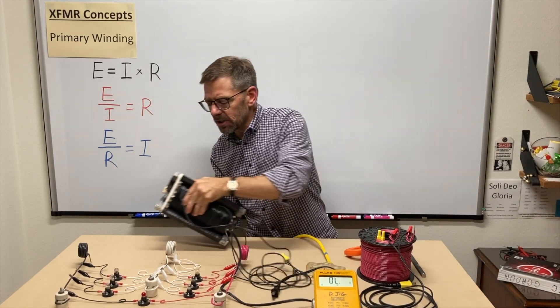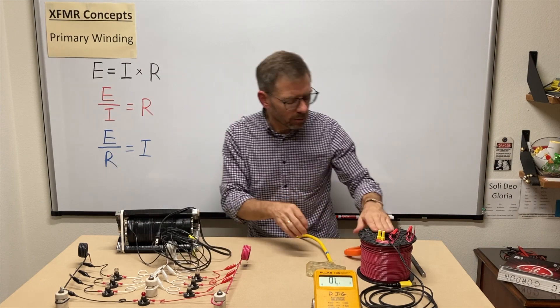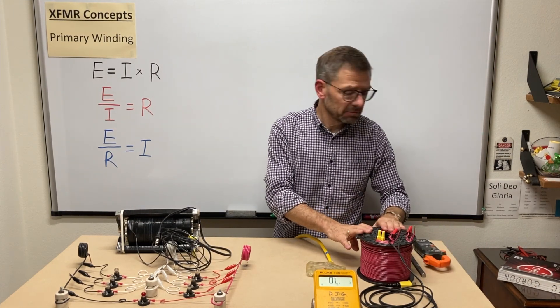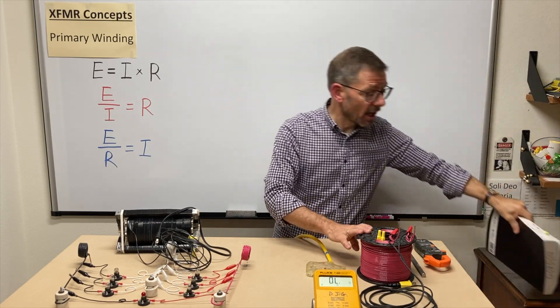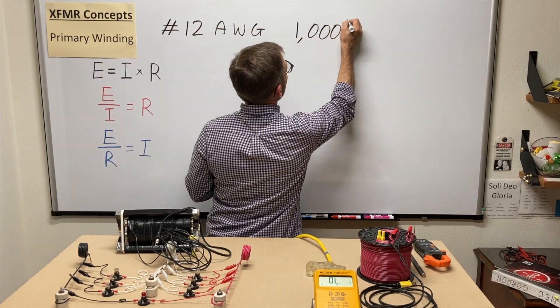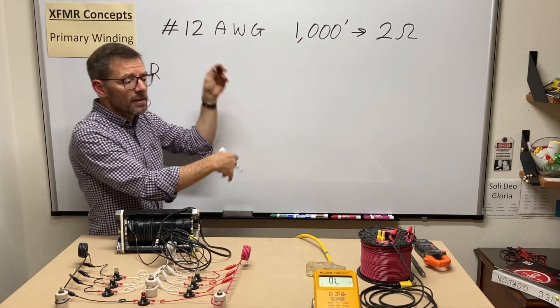And to explain that, I'll set this one aside and use just a coil of wire over here. I've got 500 feet of number 12. And if I look in my code book, chapter nine, table eight, it tells me that a thousand feet of number 12, stranded, solid, coated, uncoated,